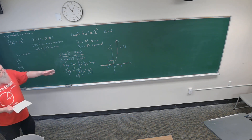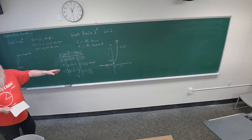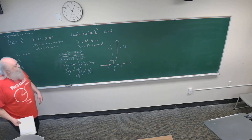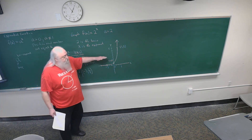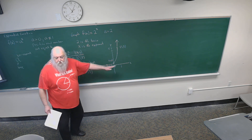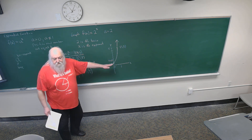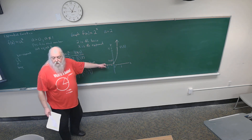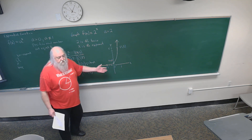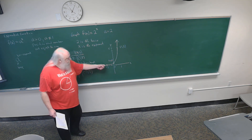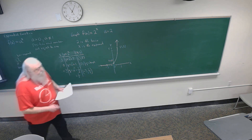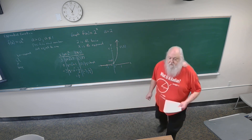Looking more closely at the graph of an exponential function, you can see it passes the horizontal line test — no matter where you draw a horizontal line, it intersects the graph in only one location. So exponential functions are one-to-one functions and they have an inverse. We're going to learn about what the inverse of an exponential function is.